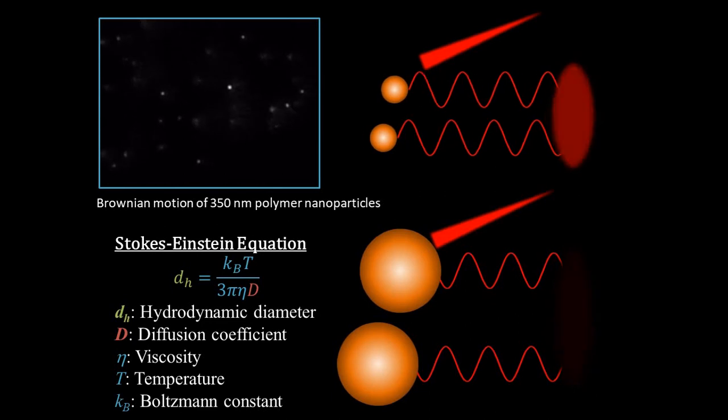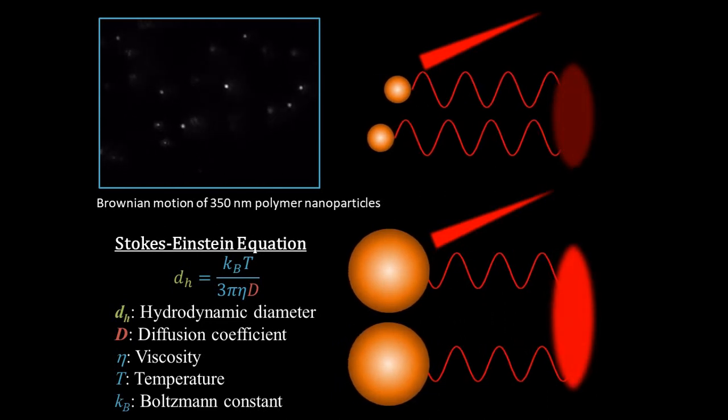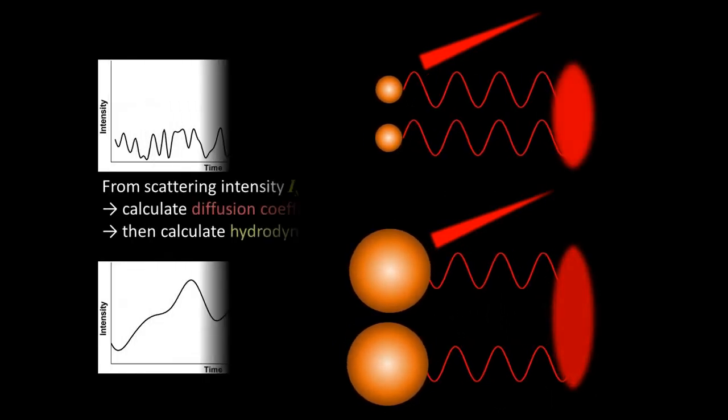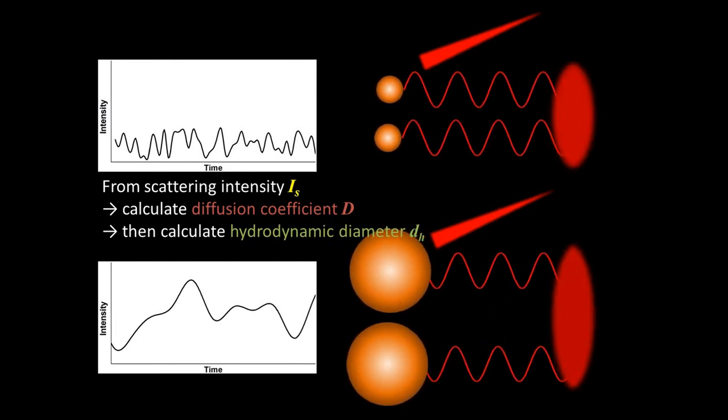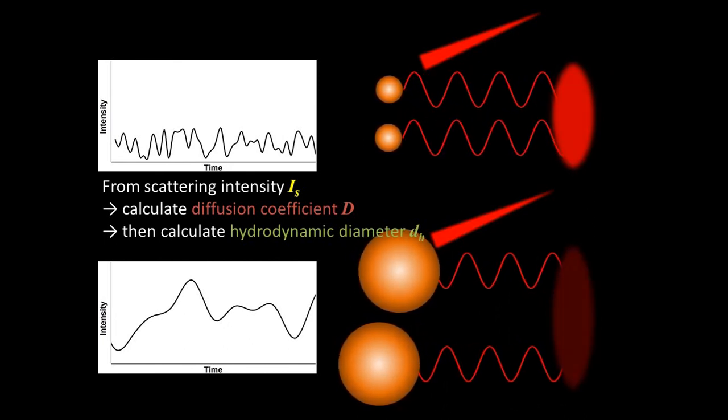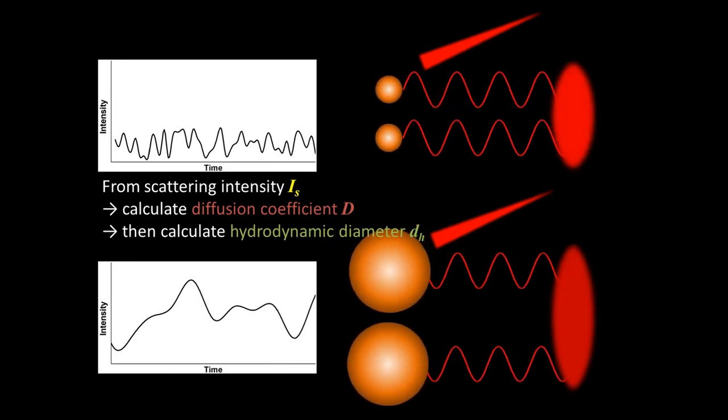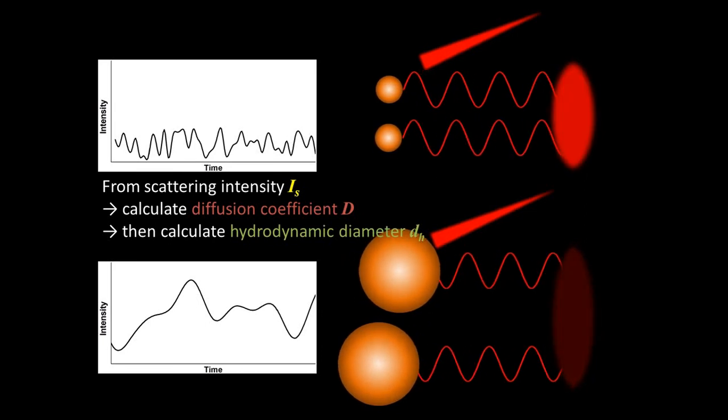Due to hydrodynamic drag, large particles move slower than small ones as modeled by the Stokes-Einstein equation. So small particles show a low intensity of scattered light with a high frequency of flickering, while large particles show a low frequency of flickering but scatter more light per particle. This flickering is related to the diffusion coefficient of the particle, and this diffusion coefficient is then used to calculate an average diameter.